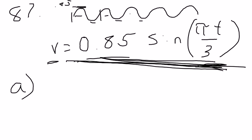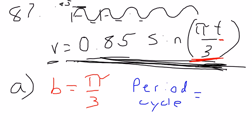Okay, so the period always deals with the B value. So what is the B value in this case? What are we multiplying T by? We're multiplying T by π over 3. And our formula for the period, or cycle in this case, is going to equal 2π over B.